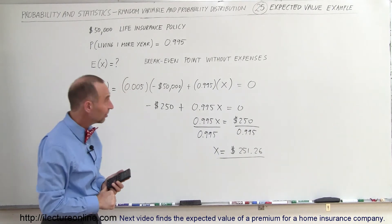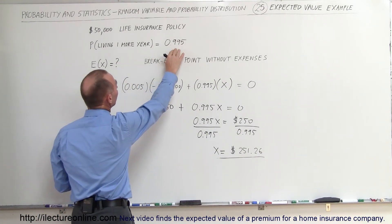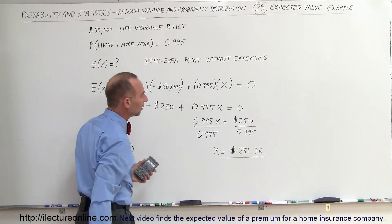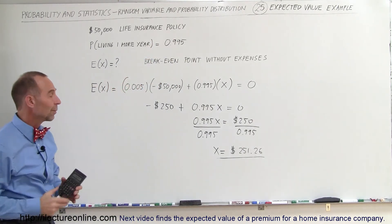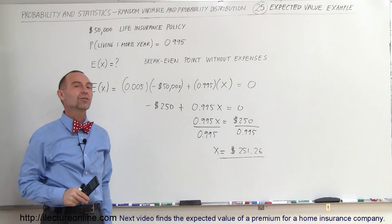So to get that $50,000 policy, if you have the probability of living one more year to be 0.995, then that policy would cost you a minimum of $251.26. So the company would break even if they had no other expenses.